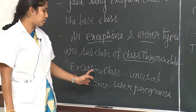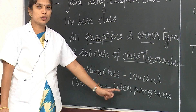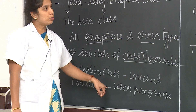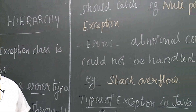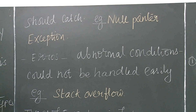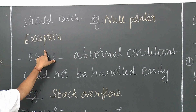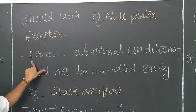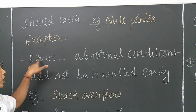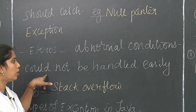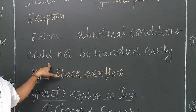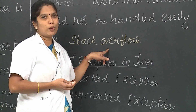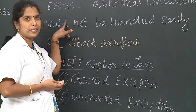The Exception class represents exceptions thrown under unusual conditions that occur when a user program should handle them — for example, NullPointerException. Errors are conditions which throw abnormal conditions that could not be handled easily, for example, StackOverflowError.